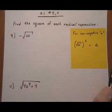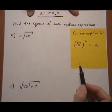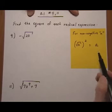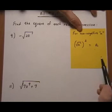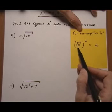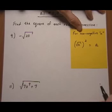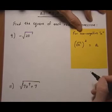8.1, numbers 9 and 11. Find the square of each radical expression. We're going to be using this property in the yellow box. For any non-negative value of a, if you square this radical, you'll get the insides back out again. We're not going to use this property when we have a negative on the inside, but if we have a positive number or zero, it works fine.